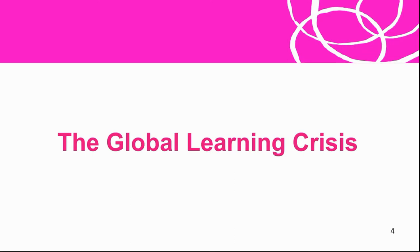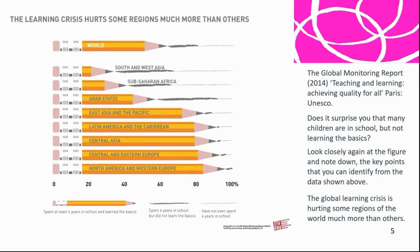It is also very important to look at the global learning crisis, a report by UNESCO. In that report, it shows regions of the world where the learning crisis hurts more. If you look at the graph, the pencil at the bottom shows the number of kids who have spent at least four years in school and learned the basics. The dark shaded line just after that pencil shows the number of children who have spent four years in school but did not learn the basics.